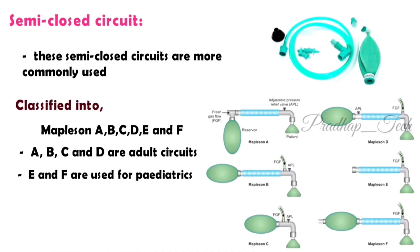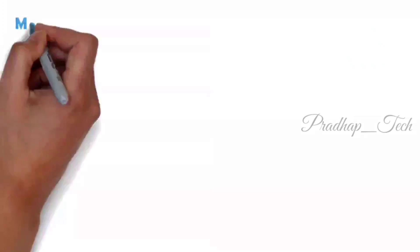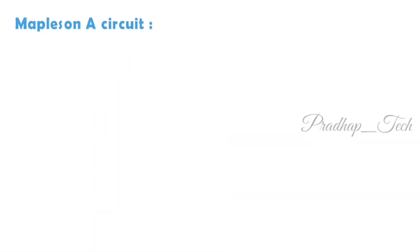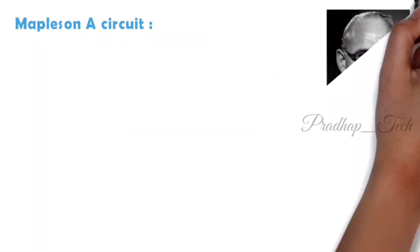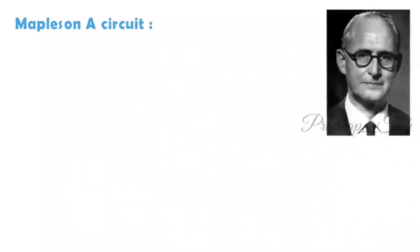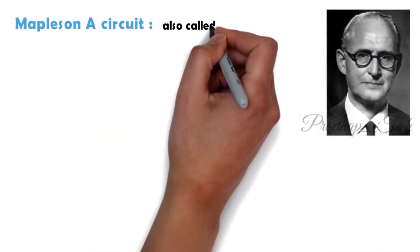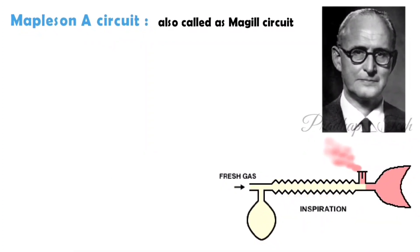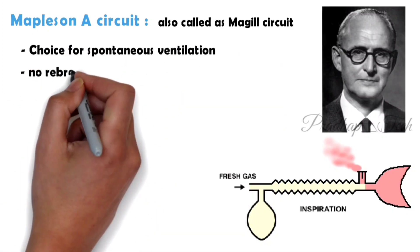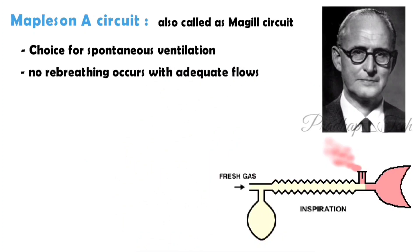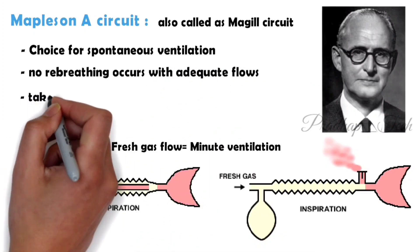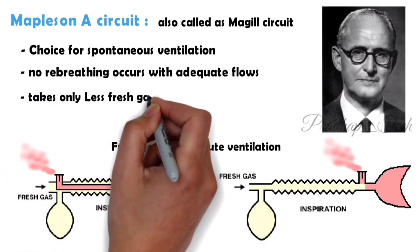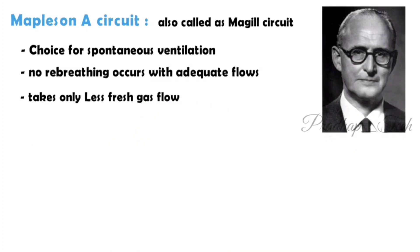Now, we'll discuss Mapleson A circuit. Mapleson A circuit was founded by Ivan McGill, so it is also called the McGill circuit. The fresh gas flow is near the reservoir bag and the expiratory valve is near to the patient. This circuit is the circuit of choice for spontaneous ventilation because there's no re-breathing with adequate flows. It takes only less fresh gas flow, so it is the best circuit for spontaneous ventilation.